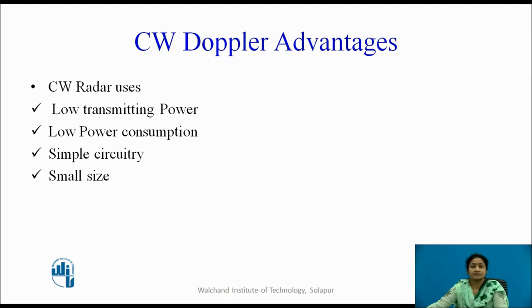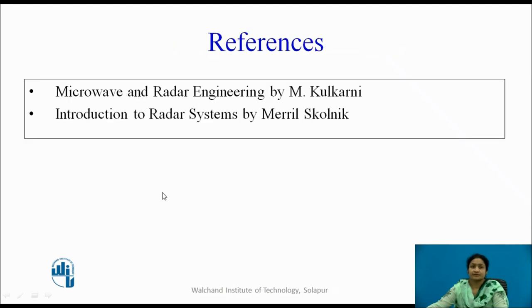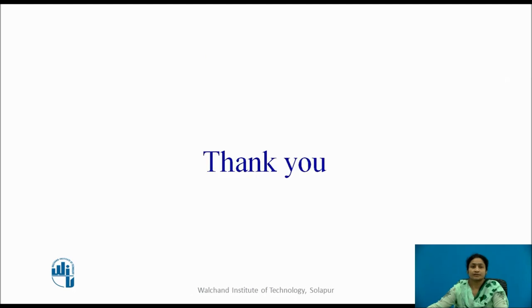The advantages of a continuous radar system include low transmitting power, low power consumption, small circuitry, and small size. These are a few references through which this content has been covered. Thank you.